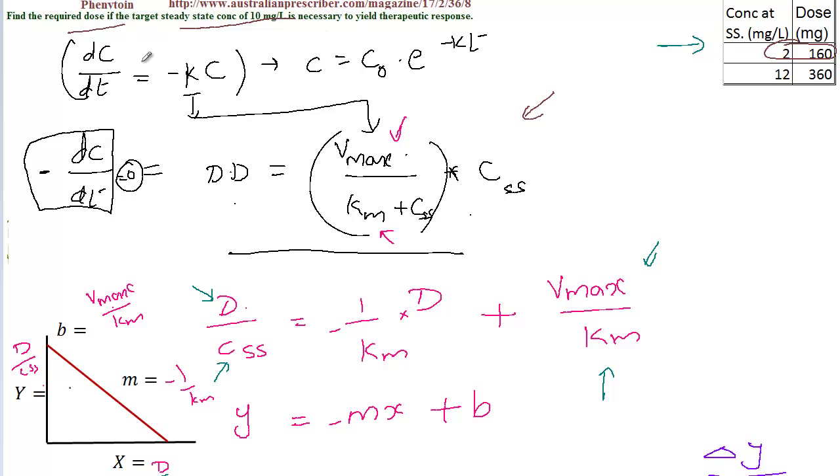Welcome back. This is part two of the earlier video. We calculated the dose required if the concentration of steady state is 10 mg per liter necessary to yield a therapeutic response.